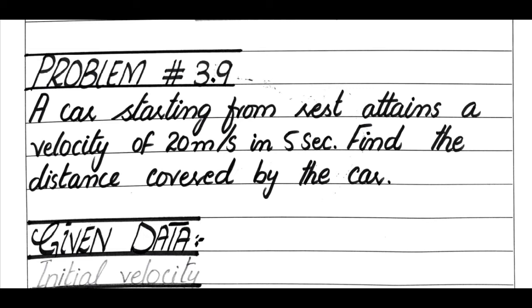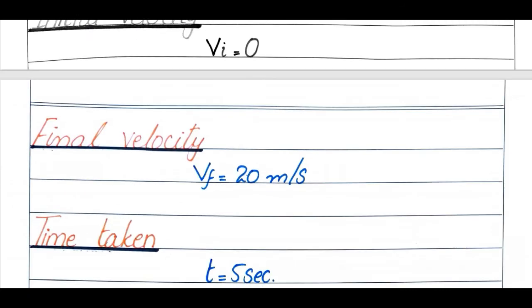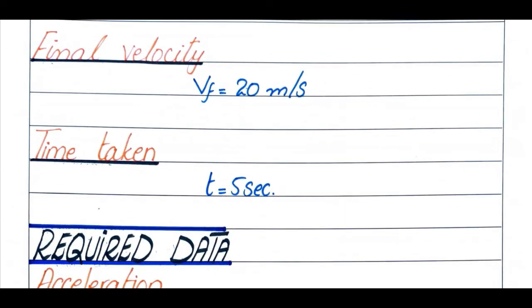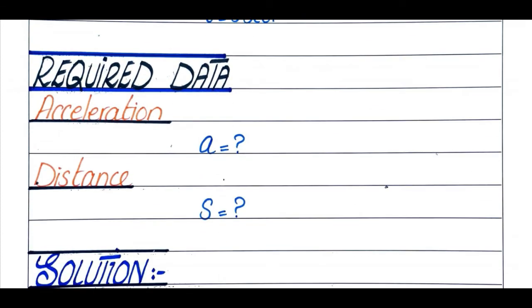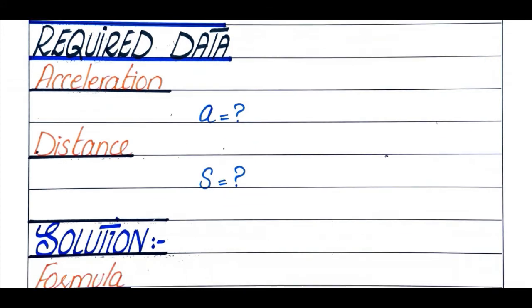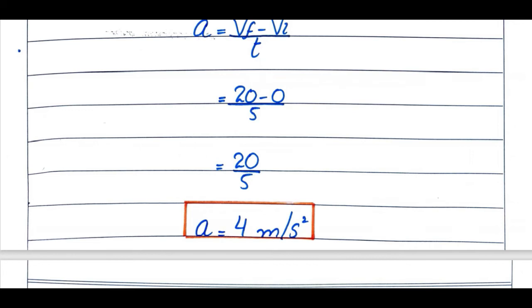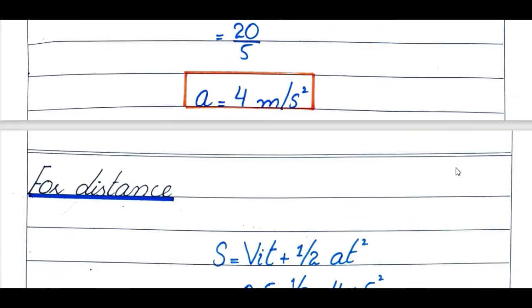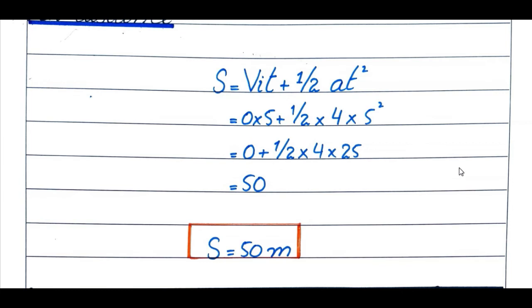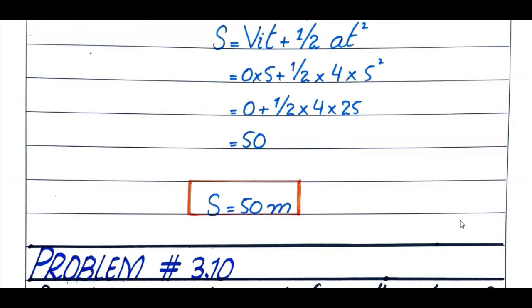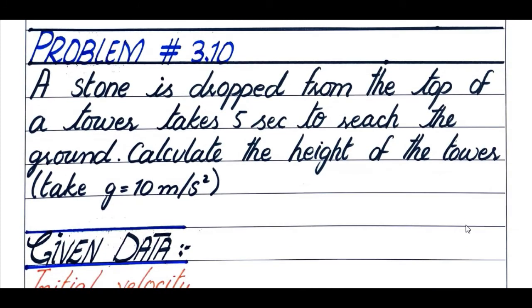Problem number 3.9: A car starting from rest attains a velocity of 20 m/s in 5 seconds. Find the distance covered. Initial velocity is 0, final velocity is 20 m/s, time is 5 seconds. For acceleration using a = (vf − vi) / t we get 4 m/s². For distance using s = vi·t + ½a·t², putting the values gives 50 meters.